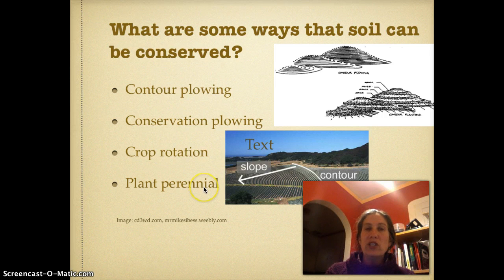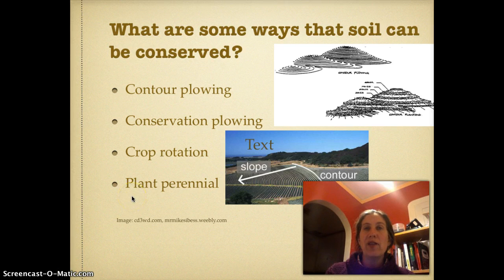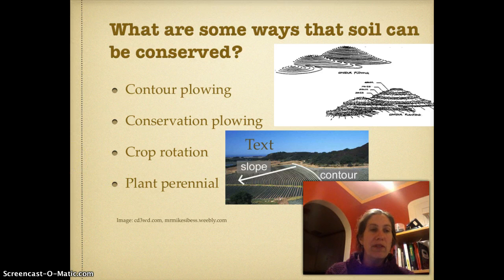Another strategy not mentioned in the textbook is planting perennials. Because if you're not planting annuals — which you have to dig up and expose the possibility of bare soil that can be easily eroded — just by planting perennials you're eliminating quite a bit of that erosion risk.